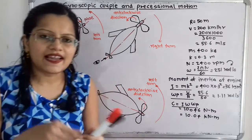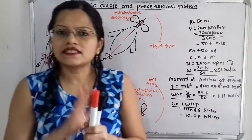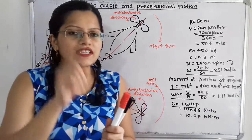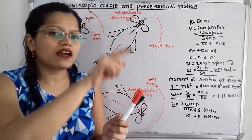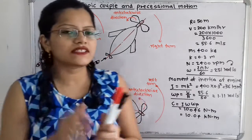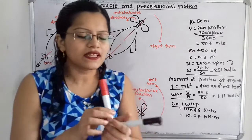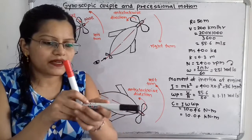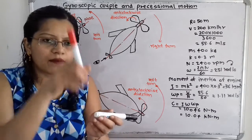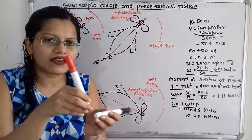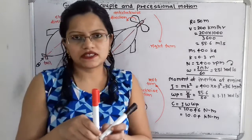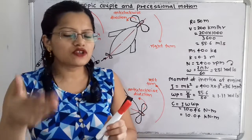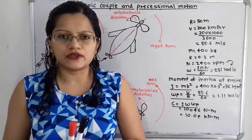We can relate all this information with a disc rotating about the horizontal axis — the axis of spin — while at the same time rotating about a vertical axis — the axis of precession. Please observe this video for further understanding.